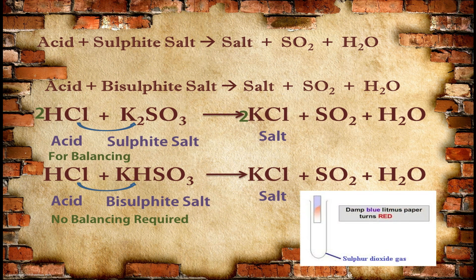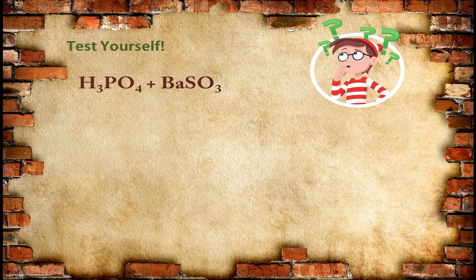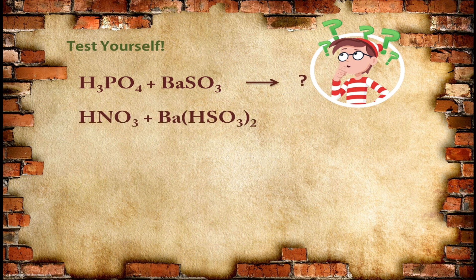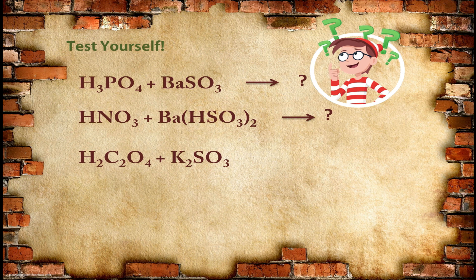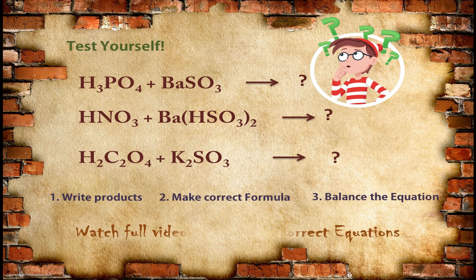Sulfur dioxide gas is a non-metallic gas and non-metallic gases are acidic in nature, so it can turn blue litmus paper red. So if you are performing this reaction in a test tube, the release of sulfur dioxide gas can be confirmed by using blue litmus paper. Now try these equations by yourself: phosphoric acid combined with barium sulfite — what is the product? Nitric acid combined with barium bisulfite — what is the product? And oxalic acid combined with potassium sulfite — identify the product.